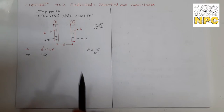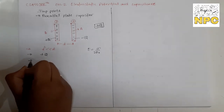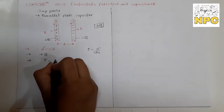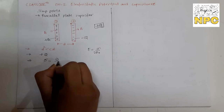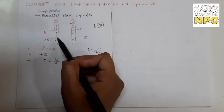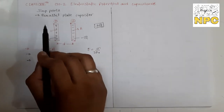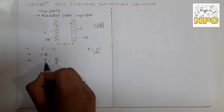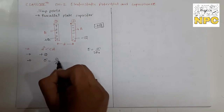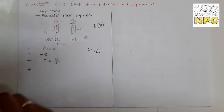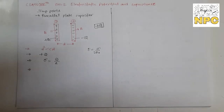Now, surface charge density sigma (σ) is equal to charge upon area, so σ = Q/A.